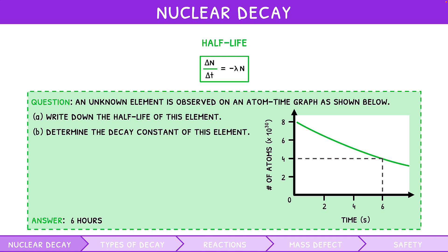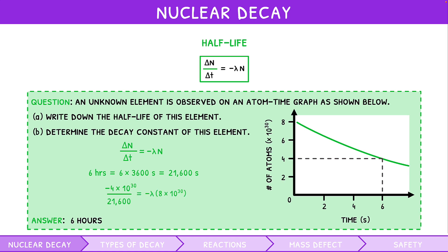For Part B, we know the formula: the change in atoms over the change in time equals the negative decay constant times the initial number of atoms. The initial number of atoms was 8 × 10³⁰, and there was a loss of 4 × 10³⁰ atoms over 6 hours. First, we convert 6 hours to seconds: 6 × 3,600 = 21,600 seconds. Substituting in the values and solving for the decay constant, we find it to be 1.2 × 10⁻⁵ per second.